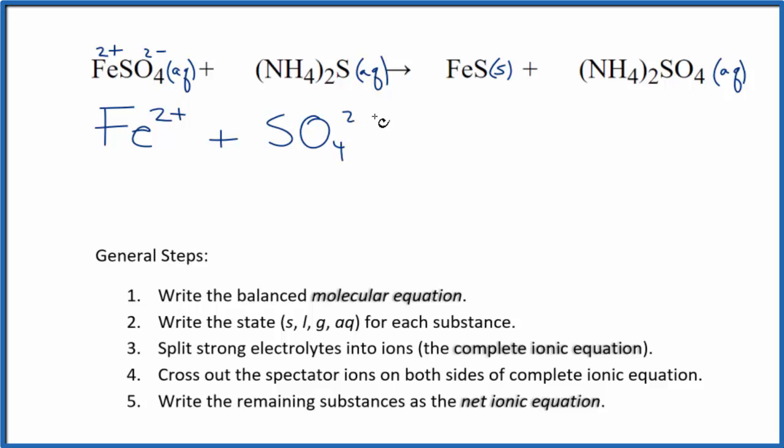For the ammonium sulfide, the ammonium ion, a good one to remember, is 1 plus. And then sulfur, that's 2 minus. So we have 2 of these ammonium ions, 2 of that NH4+. And then we have the 1 sulfide ion, S2-. So these are the reactants in our net ionic equation.